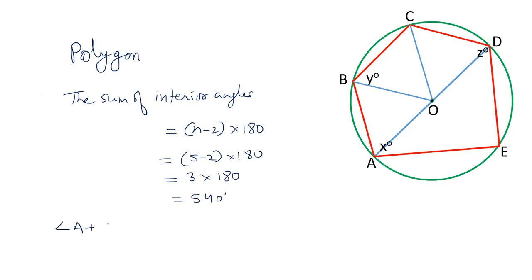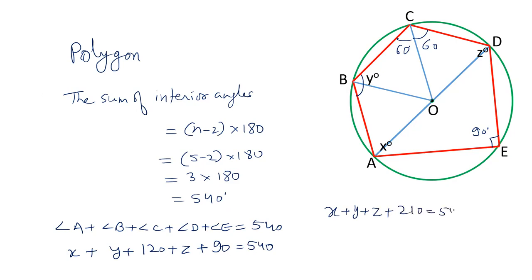Angle A plus angle B plus angle C plus angle D plus angle E equals 540 degrees. Now as AD is diameter, angle AED is going to be 90 degrees. So angle E is 90 degrees. Angle D is Z. Angle C: we have just now seen that angle OCD is 60 degrees and angle OCB is also 60 degrees. So angle BCD is 120 degrees, 60 plus 60. Angle B complete angle is Y. Angle A is X. The sum is 540. So the equation becomes X plus Y plus Z plus 120 plus 90 is 540. The value of X plus Y plus Z is going to be 540 minus 210 which equals 330 degrees.